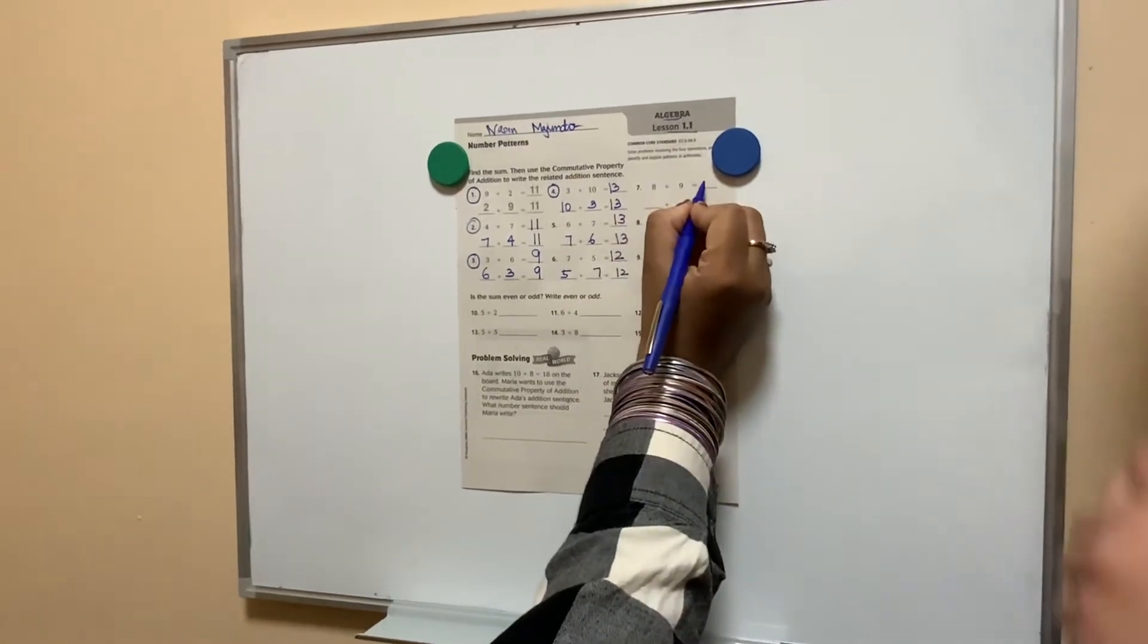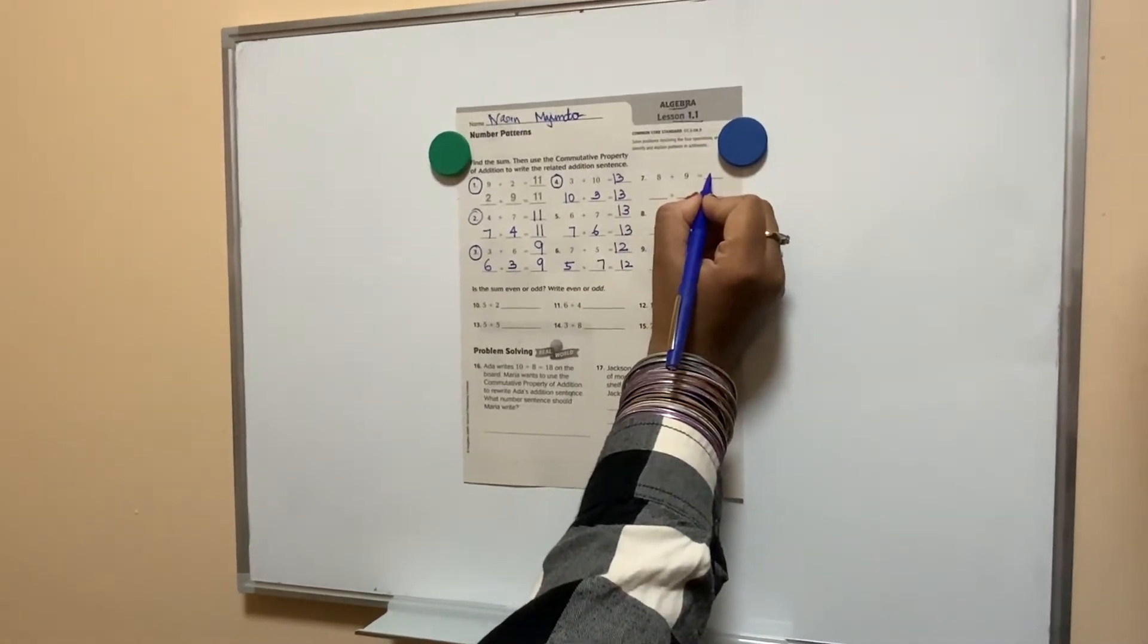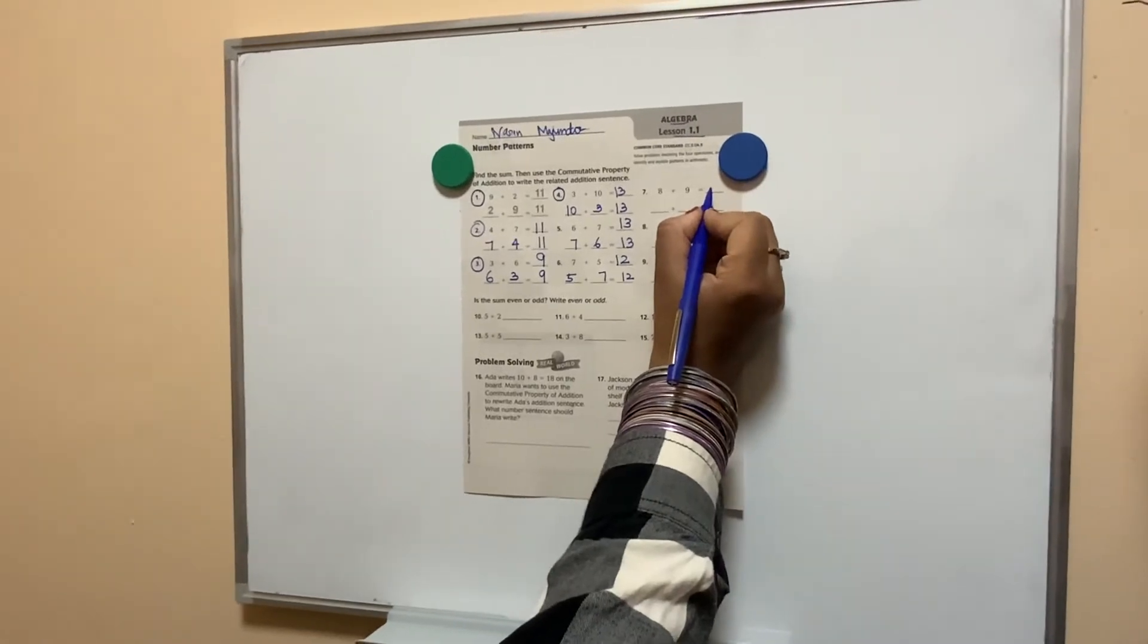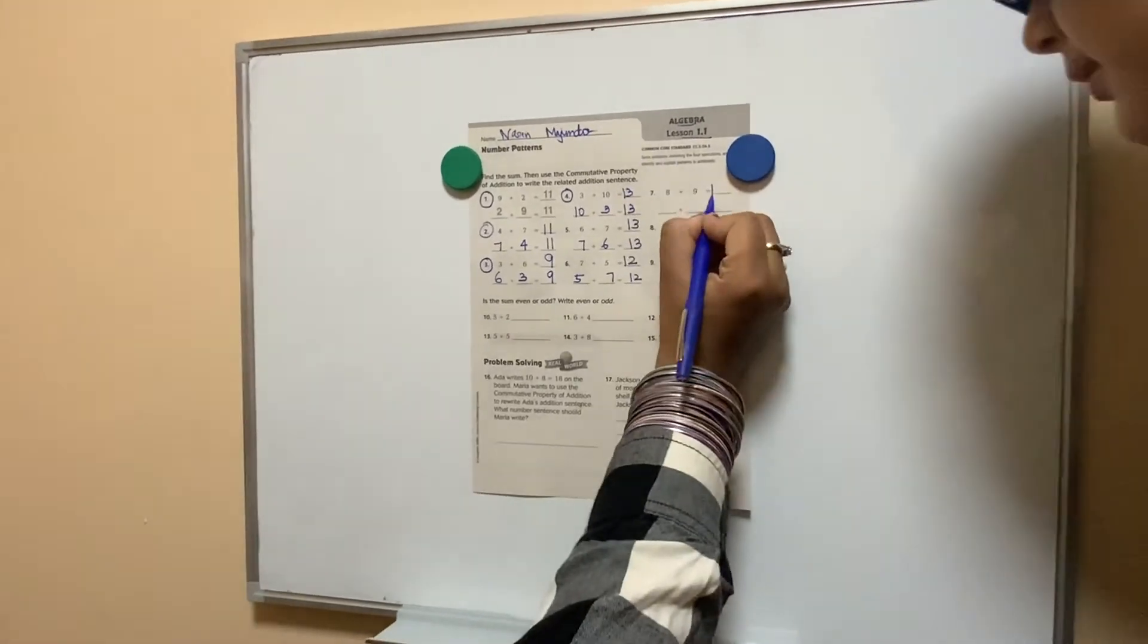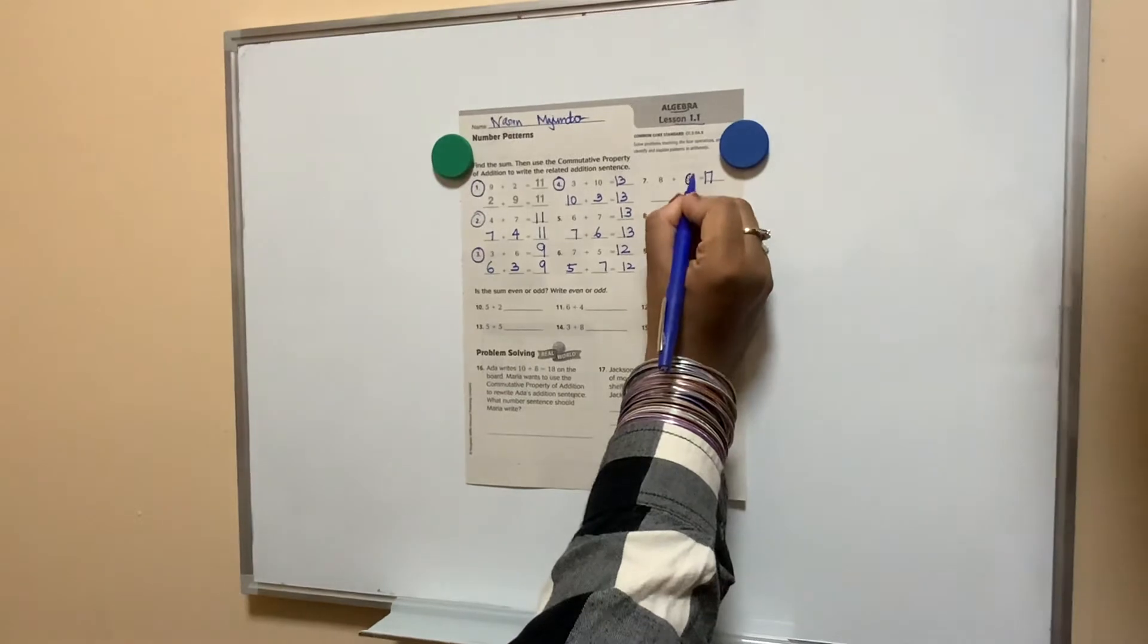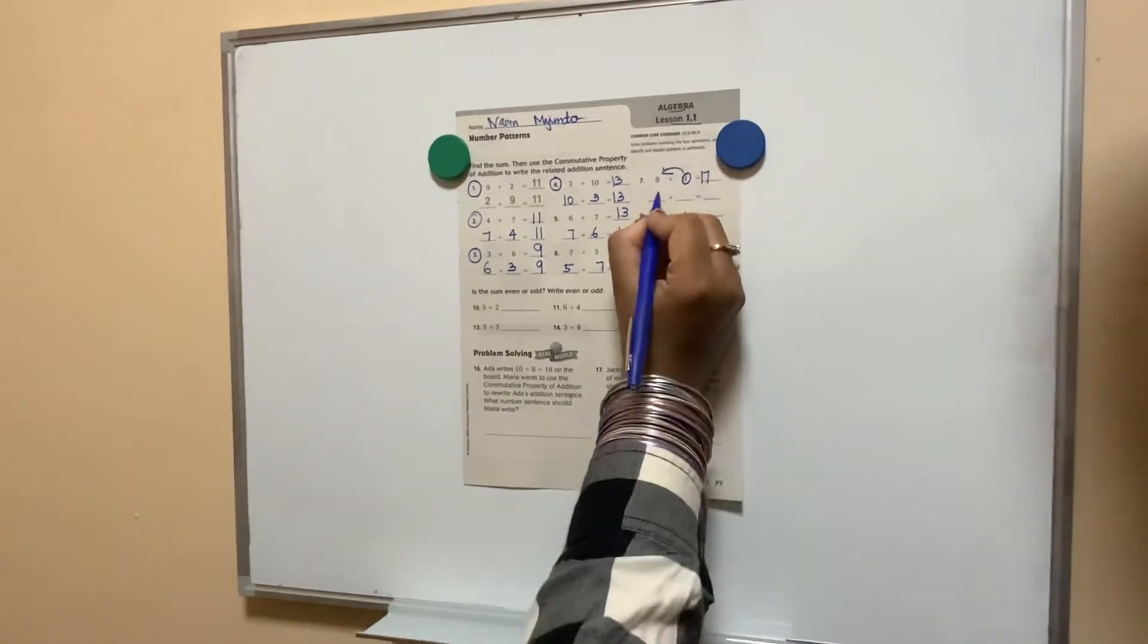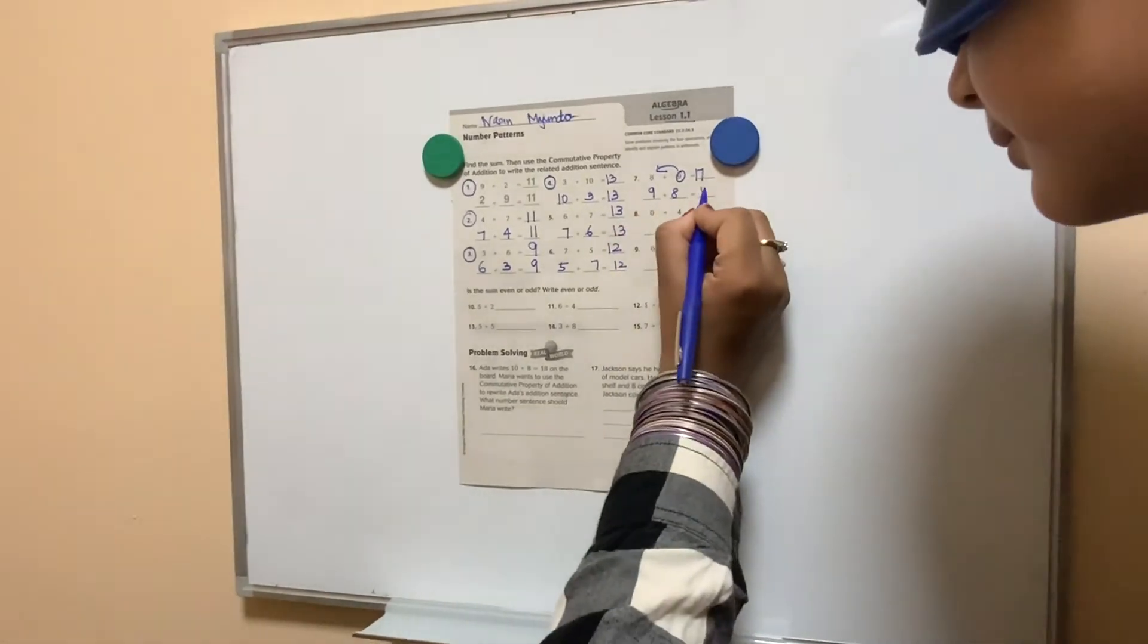8 plus 9 is? 8 plus 9 is equal to 17. If you don't know, you take the bigger number and you add the smaller number. 9 plus 8 is? 17. Good.